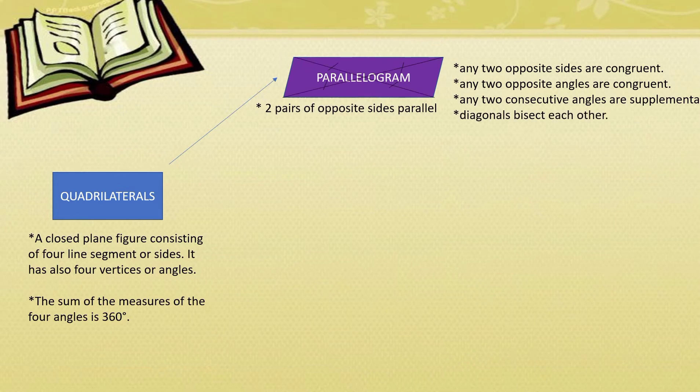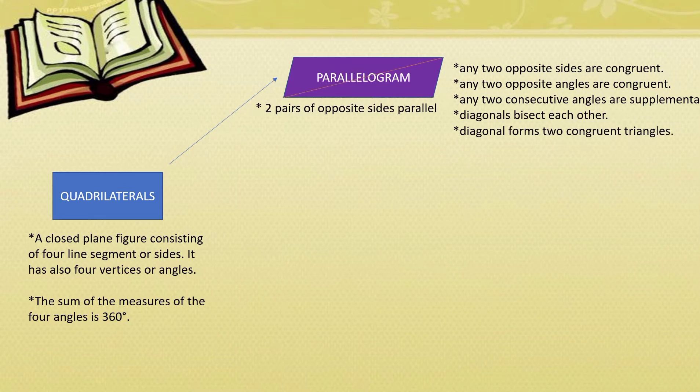Next, diagonals bisect each other. And lastly, a diagonal forms two congruent triangles.